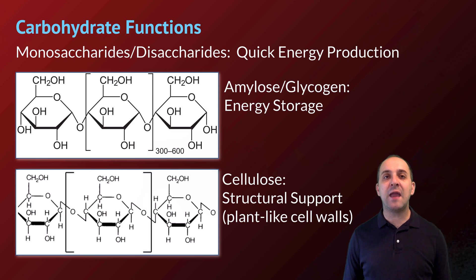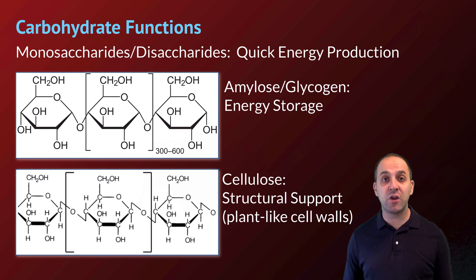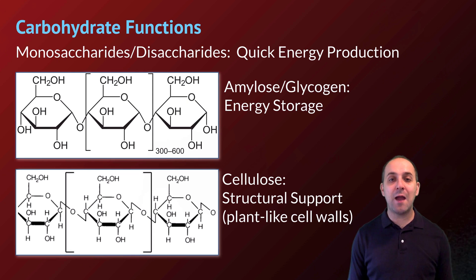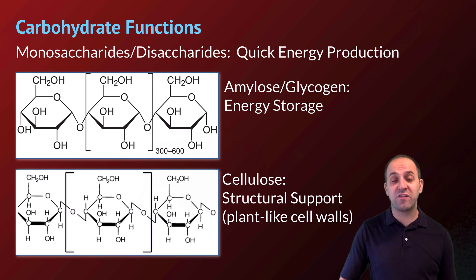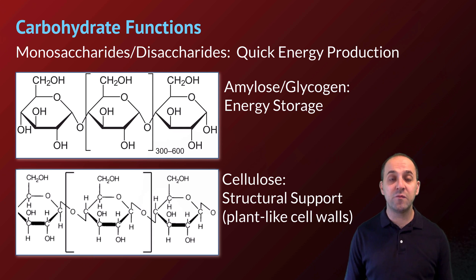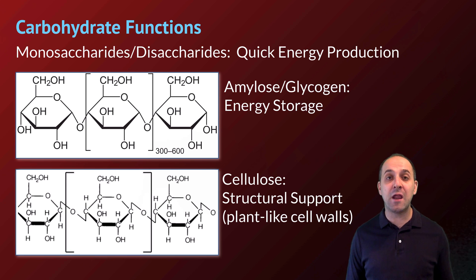In terms of the functions of carbohydrates, they're our go-to source for quick energy production — they're the starting material for cellular respiration, and monosaccharides and disaccharides are what biological systems prefer for ATP production. Excess sugar can be stored as amylose (starch) in plants or glycogen in animals for slightly longer-term energy storage. Carbohydrates also serve as structural support in cell walls surrounding many types of cells.